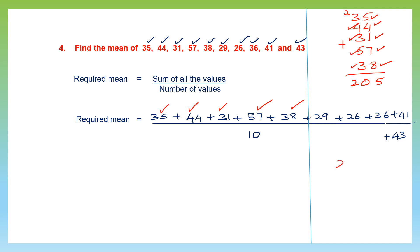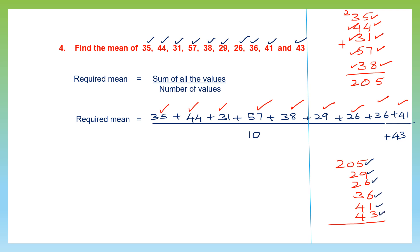Let's continue adding: 205 plus 29, 26, 36, 41, and 43. Adding the units: 5 plus 9 is 14, plus 6 is 20, plus 6 is 26, plus 1 is 27, plus 3 is 30 — carry 3. Working through the tens column: we get 380. So the sum of all those values is 380.